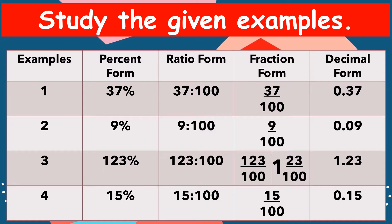Study the given examples. For number one, we have 37%. For our ratio form, we have 37 is to 100. For our fraction form, we have 37 hundredths. For our decimal form, we have 0.37 (37 hundredths).